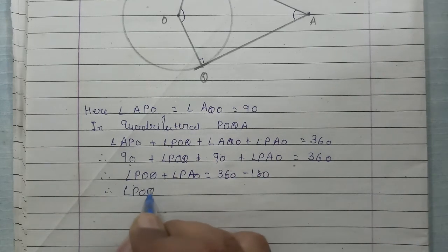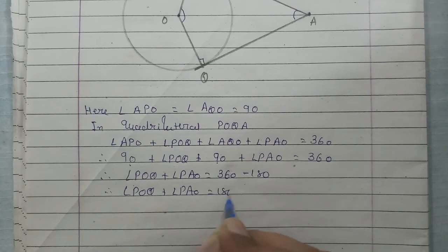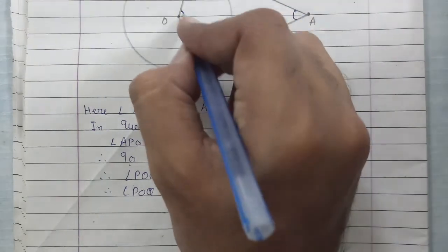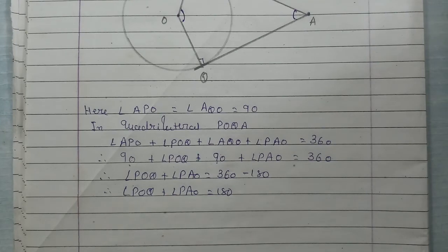So POQ plus PAO is equal to 180. When two angles add up to 180 degrees, they are supplementary. Hence proved.